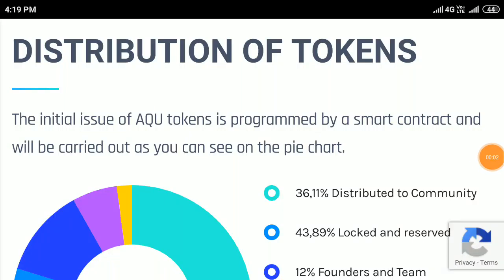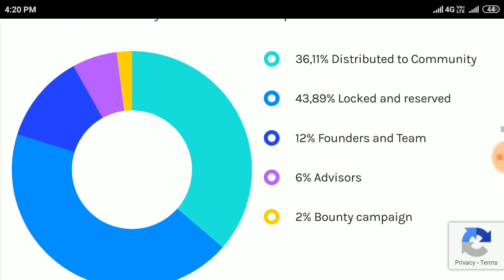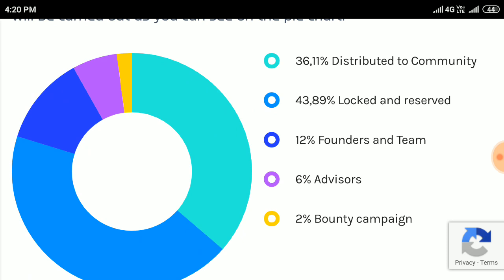How the AQUA tokens are distributed — distributed in categories. The initial issue of AQUA tokens is programmed by a smart contract and will be carried out. As you can see on the pie chart, 36.11% is distributed to the community, 43.89% is locked and reserved, and 12% goes to founders.